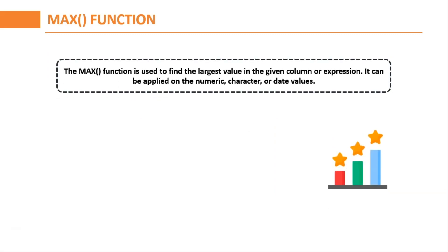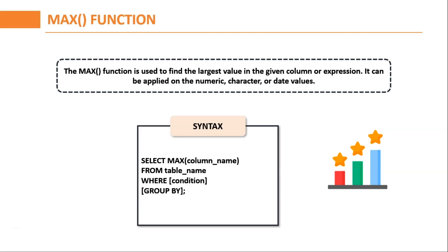Next, we have the MAX function. The SQL MAX function is used to find the maximum value or highest value of a certain column or expression. This function is useful to determine the largest of all the selected values of a column. The syntax is: SELECT MAX(column_name) FROM table_name. You can specify the condition as per your requirement using the WHERE clause and you can use the GROUP BY clause as well.